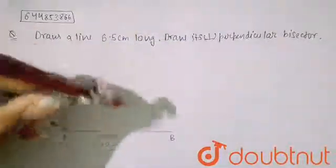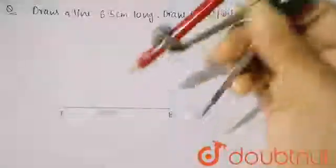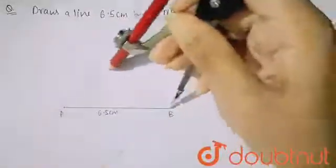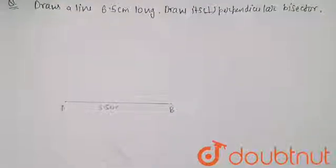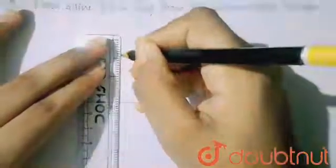Similarly, opposite side also you will mark, so I will mark it here also. Now from B also, by the same measure, you have to mark at this point and similarly at this point also.